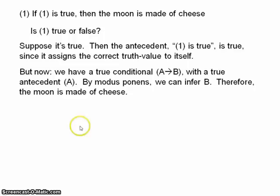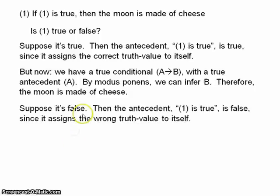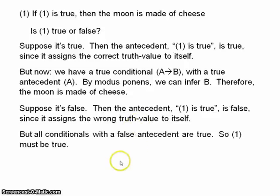So, let's assume that it's false instead. Well, in that case, the antecedent, 1 is true, is false, since it assigns the wrong truth value to itself, obviously, because 1 is actually false. Now, the problem is, by the truth tables for the conditional, all conditionals with a false antecedent are true. So 1 must be true.